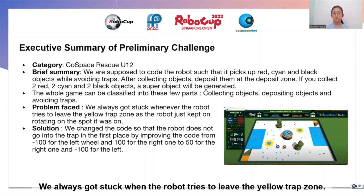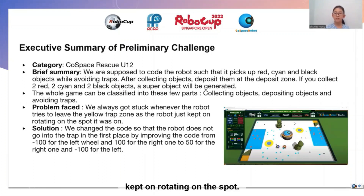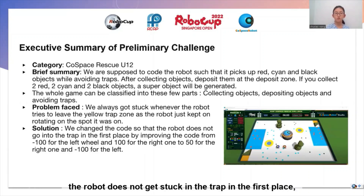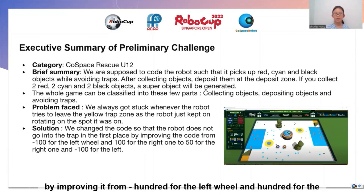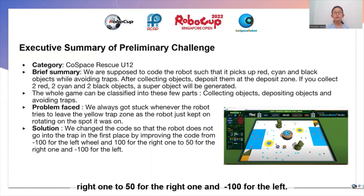We always got stuck when the robot tried to leave the yellow trap zone, as it just kept rotating on the spot. So we changed the code such that the robot does not go into the trap in the first place, by improving it from negative 100 for the left view and 100 for the right, to 50 for the right and negative 100 for the left.